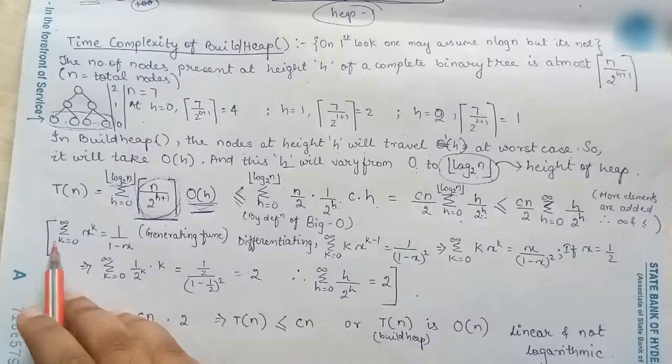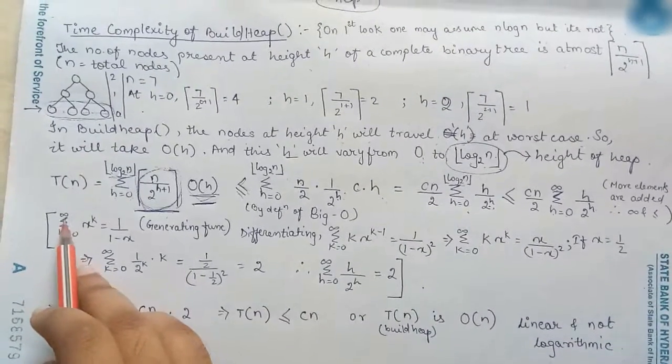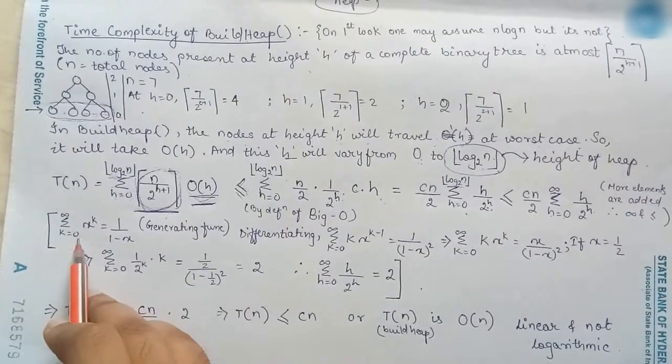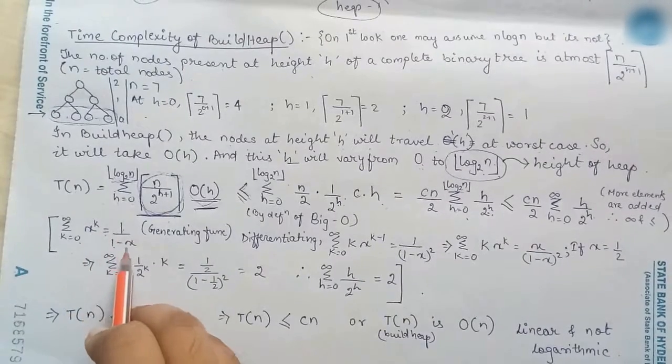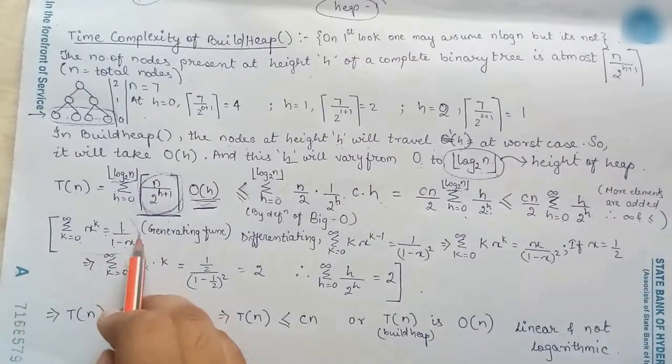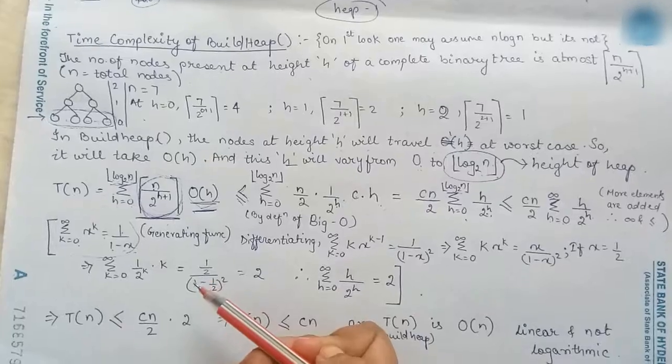And we also know that summation k equal to 0 to infinity x to the power k equal to 1 by 1 minus x. This is known as the generating function it may be in the discrete mathematics.